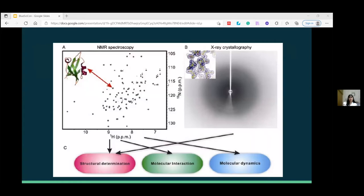In this figure we can see that how NMR spectroscopy and X-ray crystallography combine and provide us three different things: structural determination, molecular interaction, and molecular dynamics. These things are very important for structural determination.